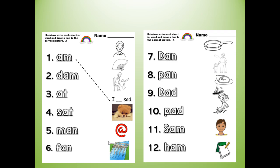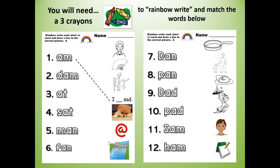So if you got a worksheet from your teacher that looks like this, what you will need, you will need three crayons, three different color crayons. So rainbow write and match the words below.